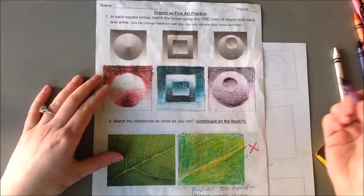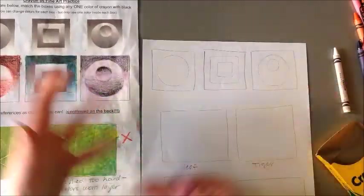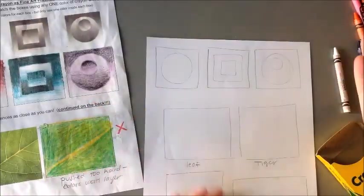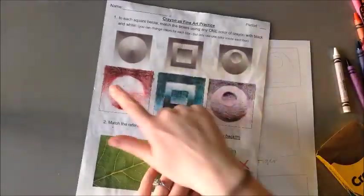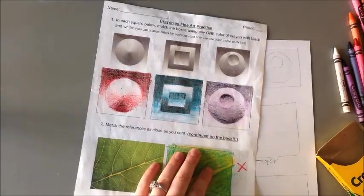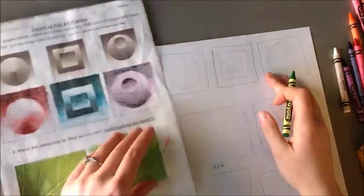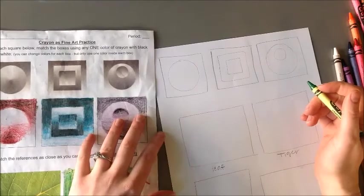So for these squares, you're going to pick any color you want and then just use black and white to create the values and all that. So I'll use a color that I didn't use on my original, so I'll use green. I've got my green ready and we'll go ahead and do this center box because it's the one that's kind of more complicated.